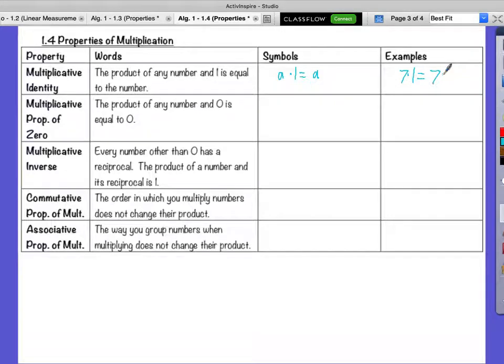Multiplicative property of 0. Let's talk about this. The product of any number and 0 is zero, every time. If you have 0 groups of something or you have so many groups of 0, you don't have any. So in symbols, a times 0 is equal to zero.